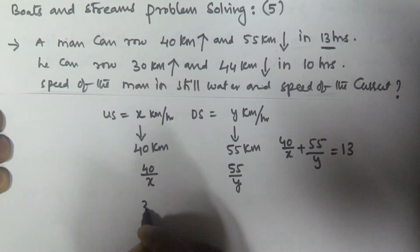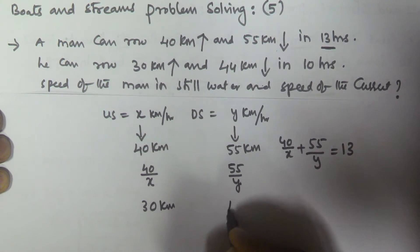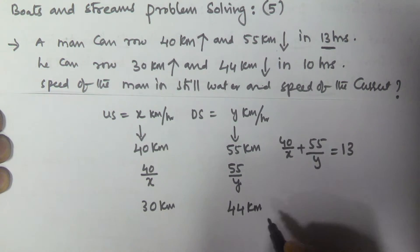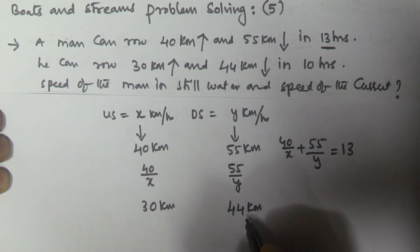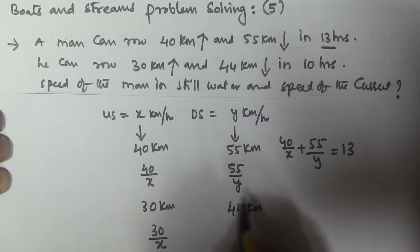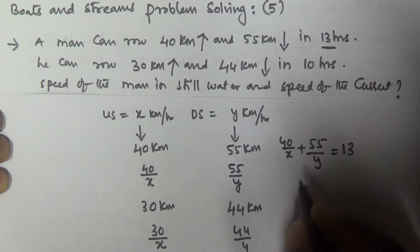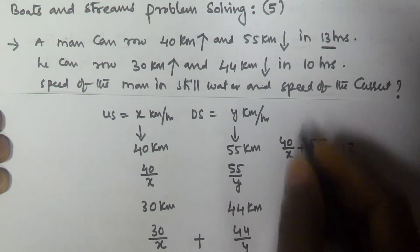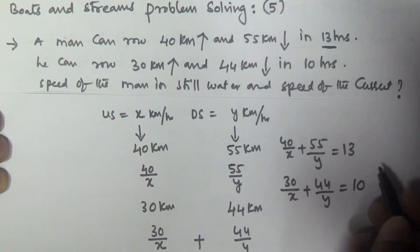In the second case, he traveled 30 kilometers upstream and 44 kilometers downstream. The time taken to travel 30 kilometers upstream is 30/x, since the upstream speed is x, and the time taken to travel 44 kilometers downstream at speed y is 44/y. The total time is 10 hours, so 30/x plus 44/y is equal to 10.